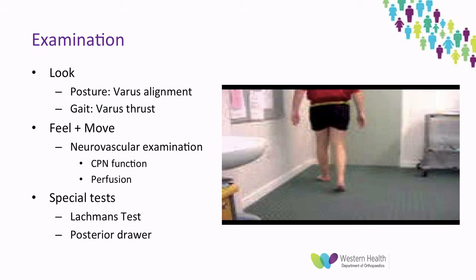On examination, what you'd be looking for — first on inspection — is potentially a varus malalignment of the limb as well as a varus thrust gait. On examination, you also want to elicit if there is any dysfunction to the common peroneal nerve, which can also be injured in these types of presentations. So look for a foot drop, check for sensation and make sure the popliteal vessels are still intact by ensuring the foot is well perfused.